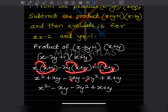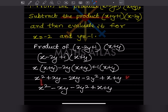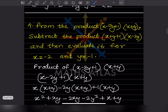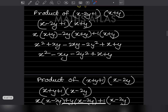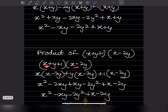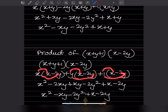After expanding: x squared plus xy minus 2xy minus two y squared. Be careful with the minus sign — plus and minus gives minus. Collecting like terms: plus xy minus 2xy gives minus xy. So this is the product of the first expression. Now let us take the product of the second expression the same way: take the first term with the bracket, plus y with the bracket, plus one with the bracket, and expand.